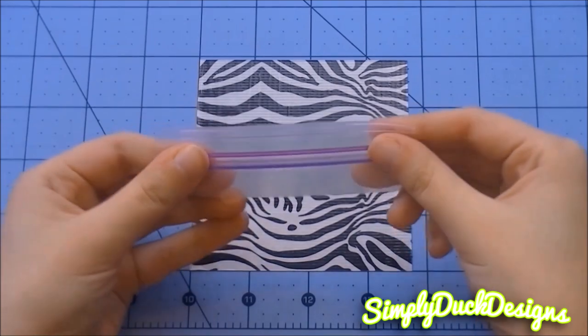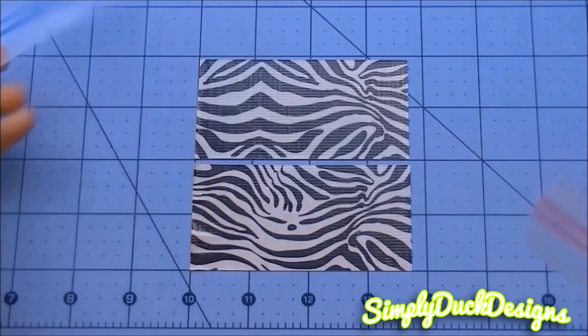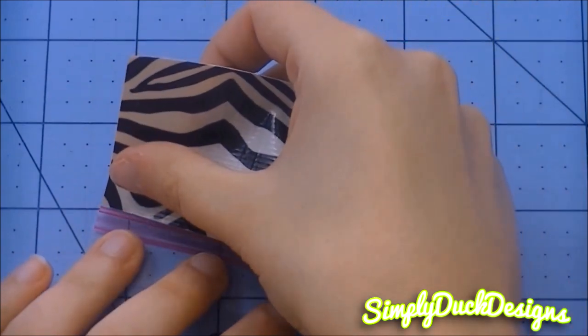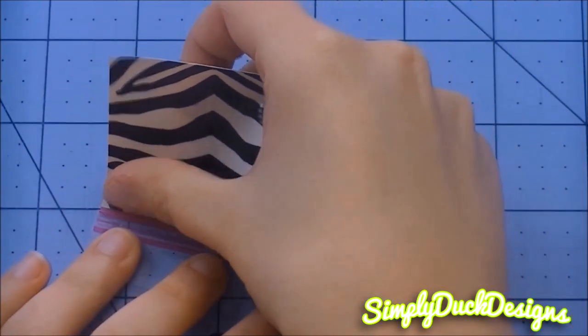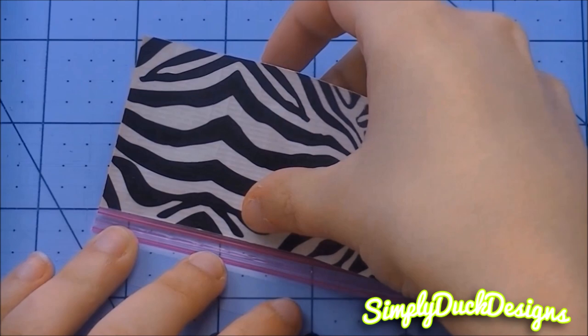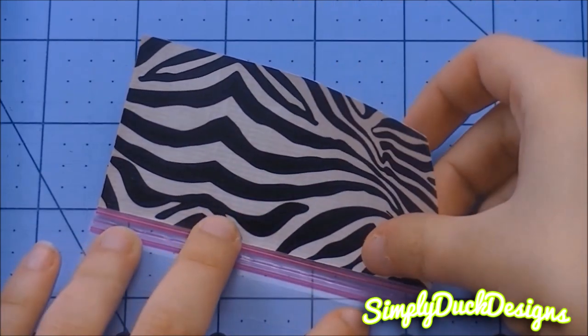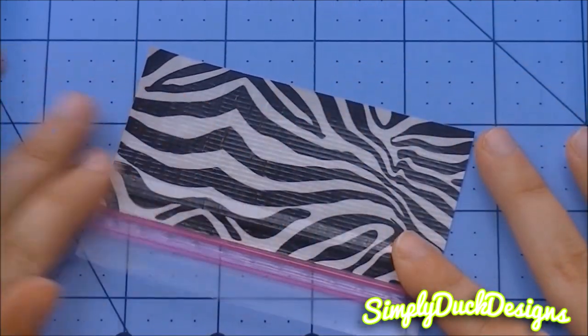Now we're going to take our piece of Ziploc and pull that apart. We're going to take one of our strips and we're just going to line that up right above the Ziploc. You don't want to put it on the Ziploc part, just right above it, like so. Flatten that down really nicely.